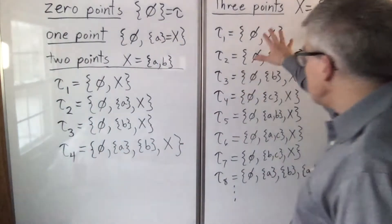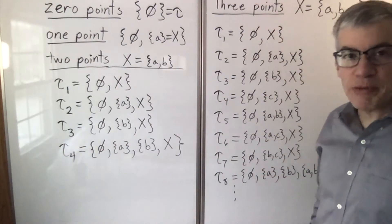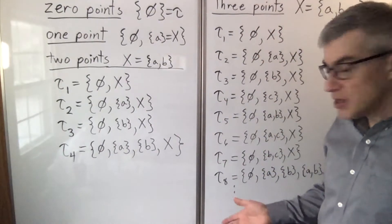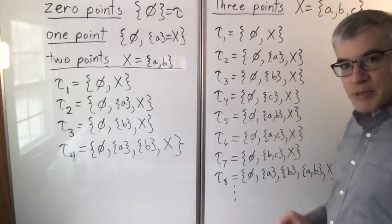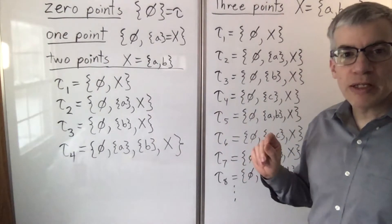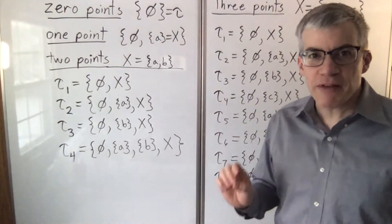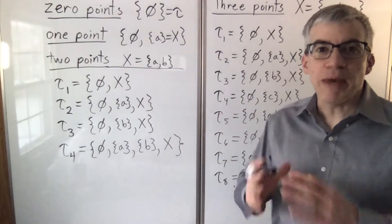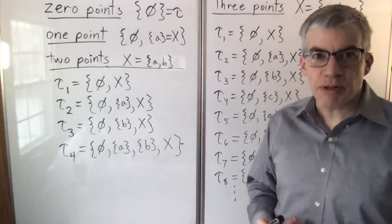Now I could start to list out the topologies on three points, but there's actually 29 of them, so this is going to get very time and space consuming. So it's very important when you're doing advanced math to be willing to make up a new notation to condense and simplify.